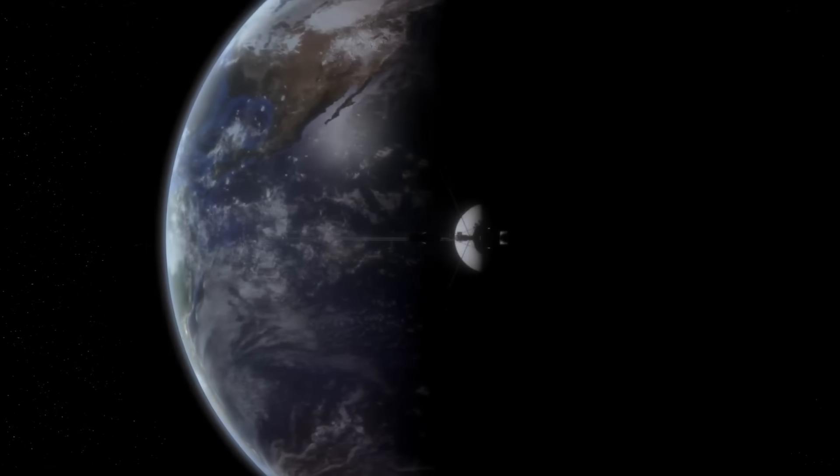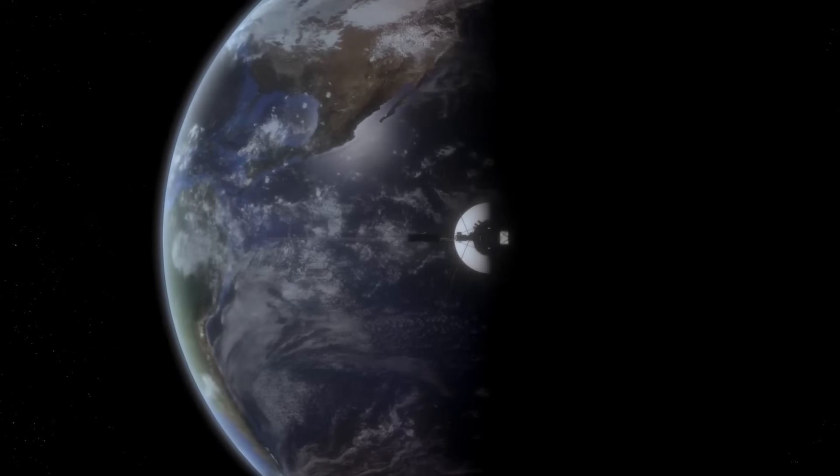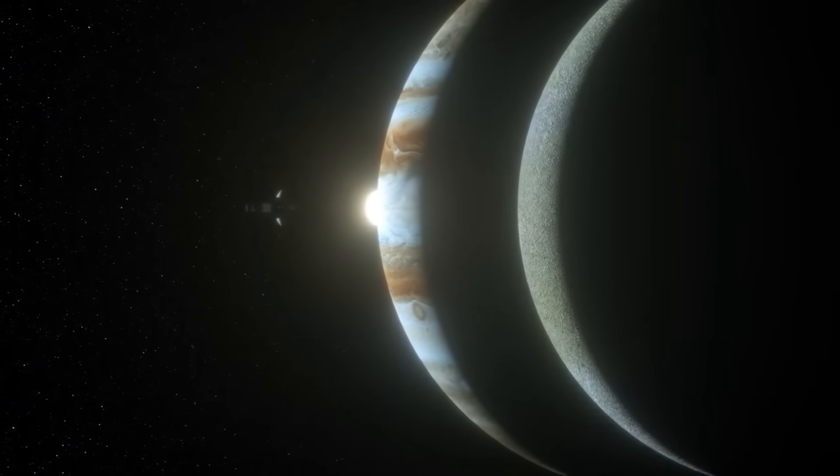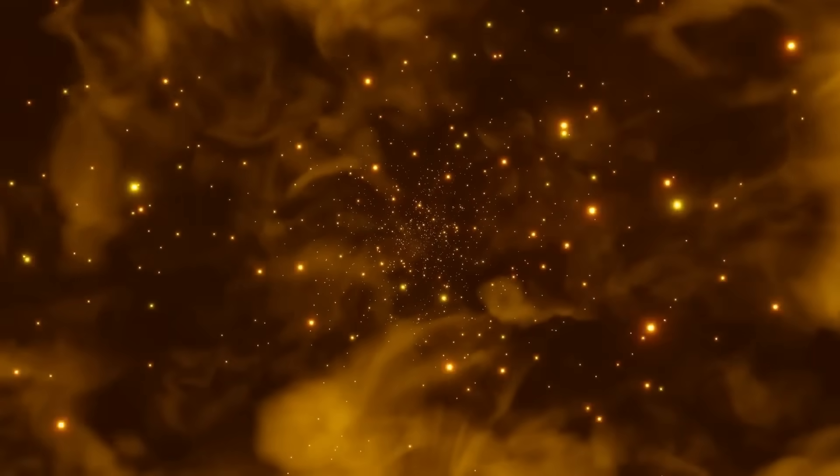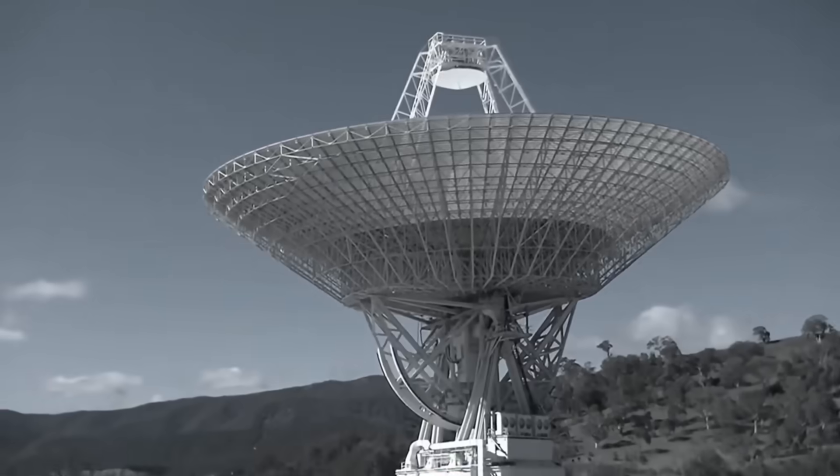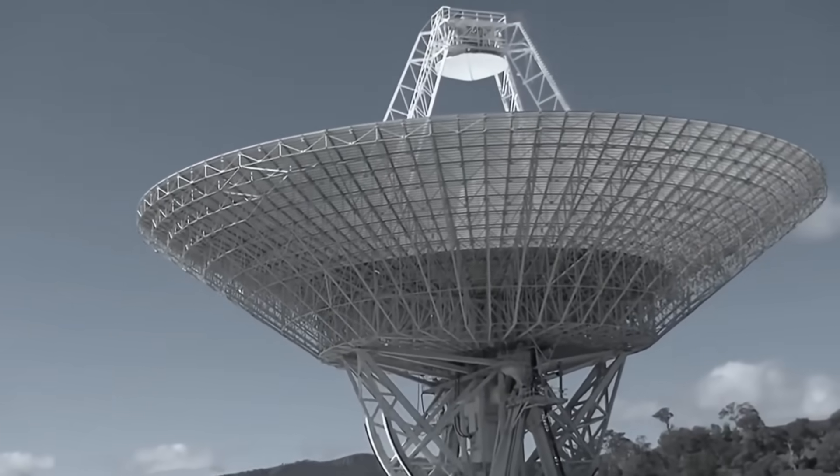Voyager 1 is now operating in a regime where we cannot send replacements, cannot adjust instruments, and cannot directly test competing explanations. We receive the data passively, delayed by more than 20 hours, and do our best to make sense of it from afar.